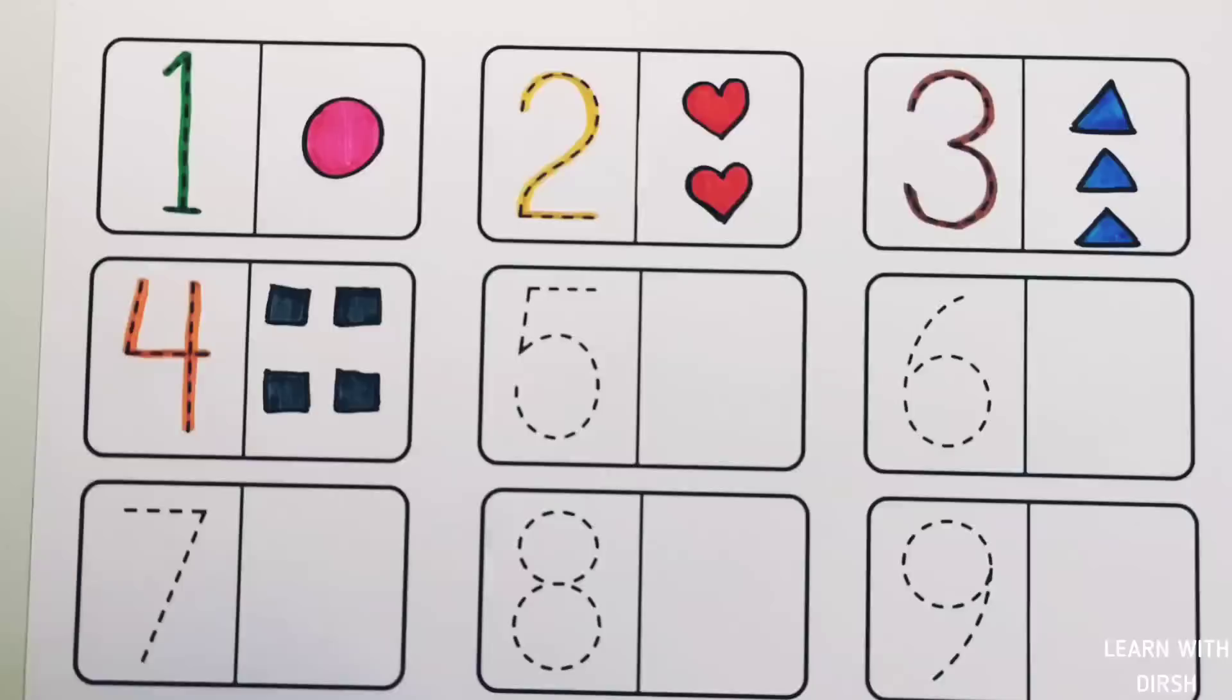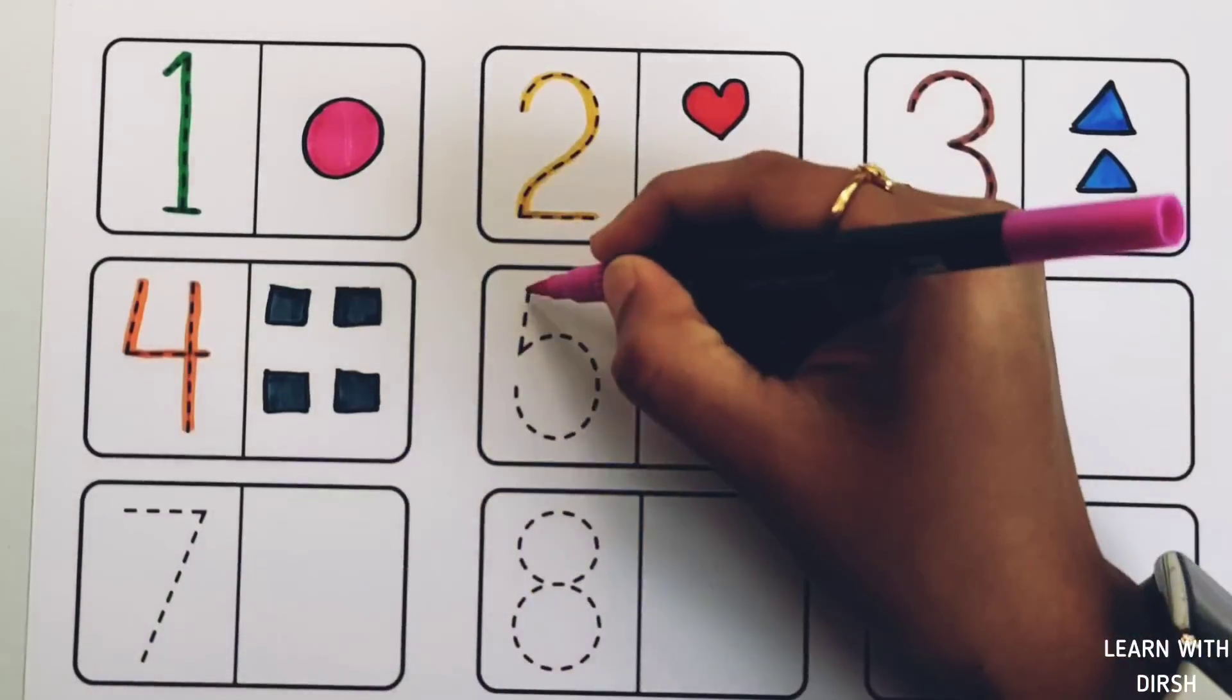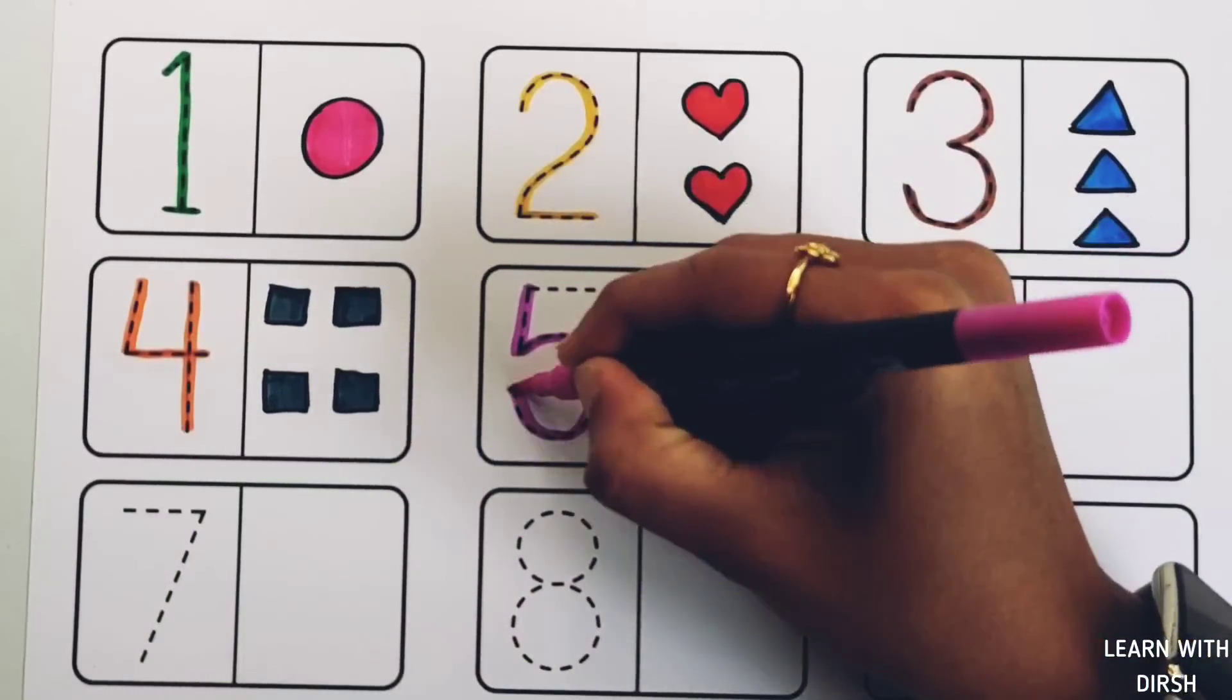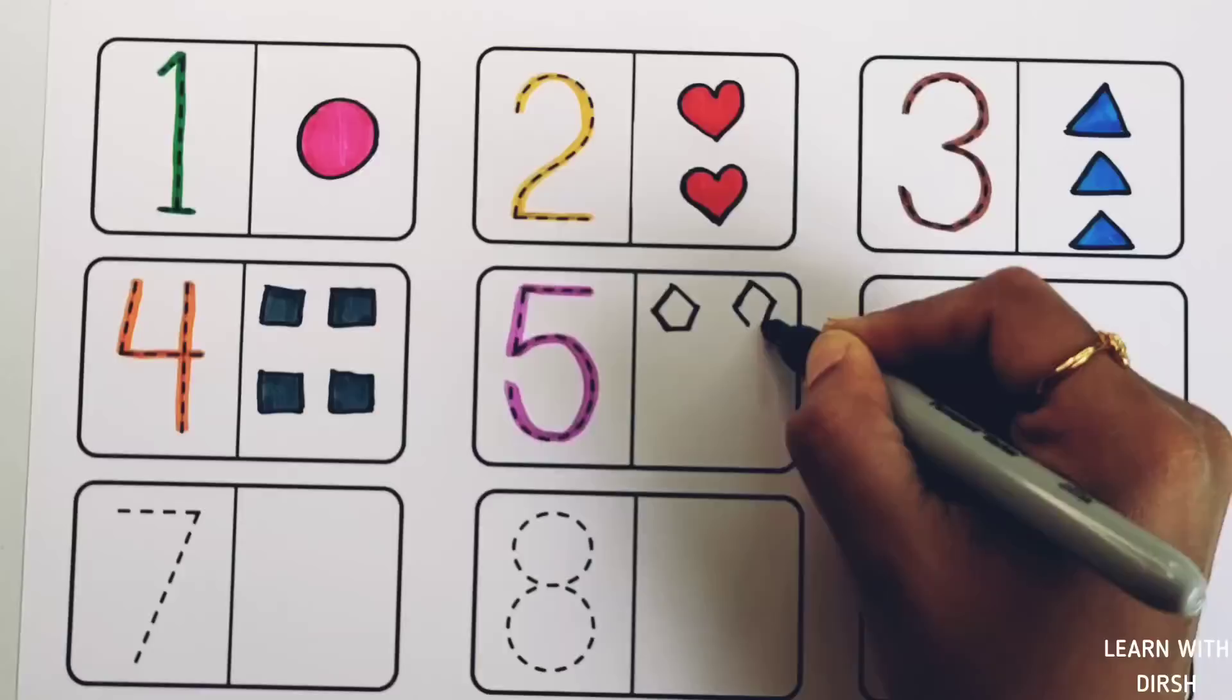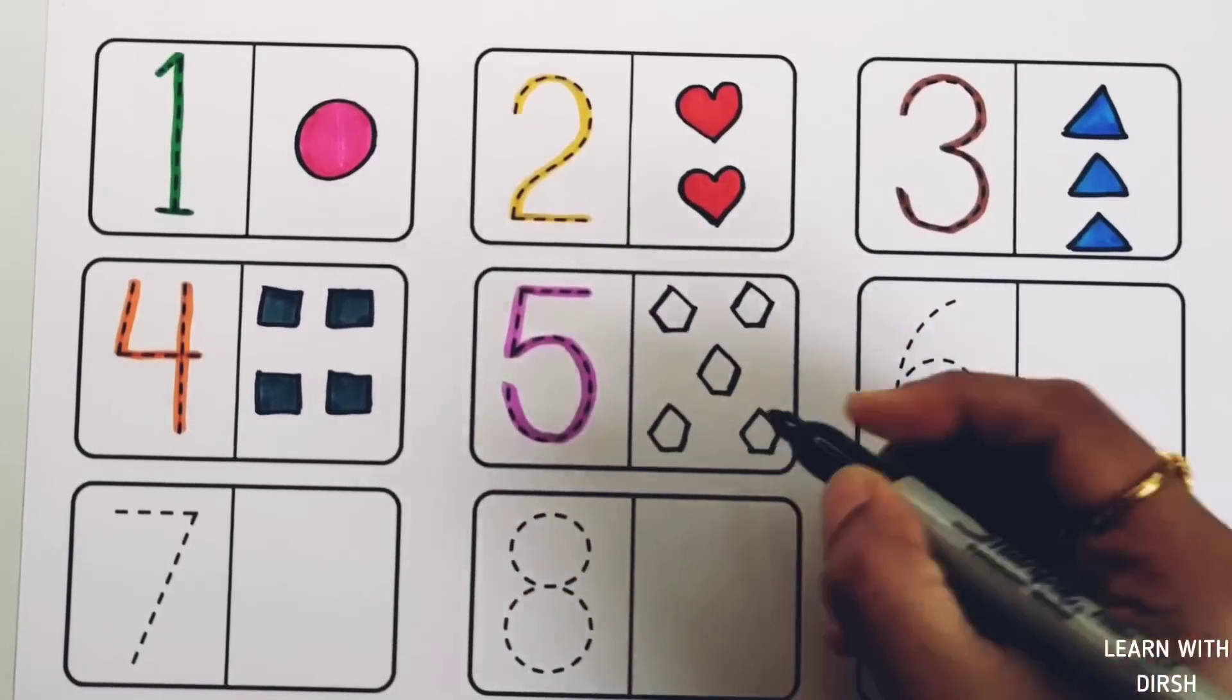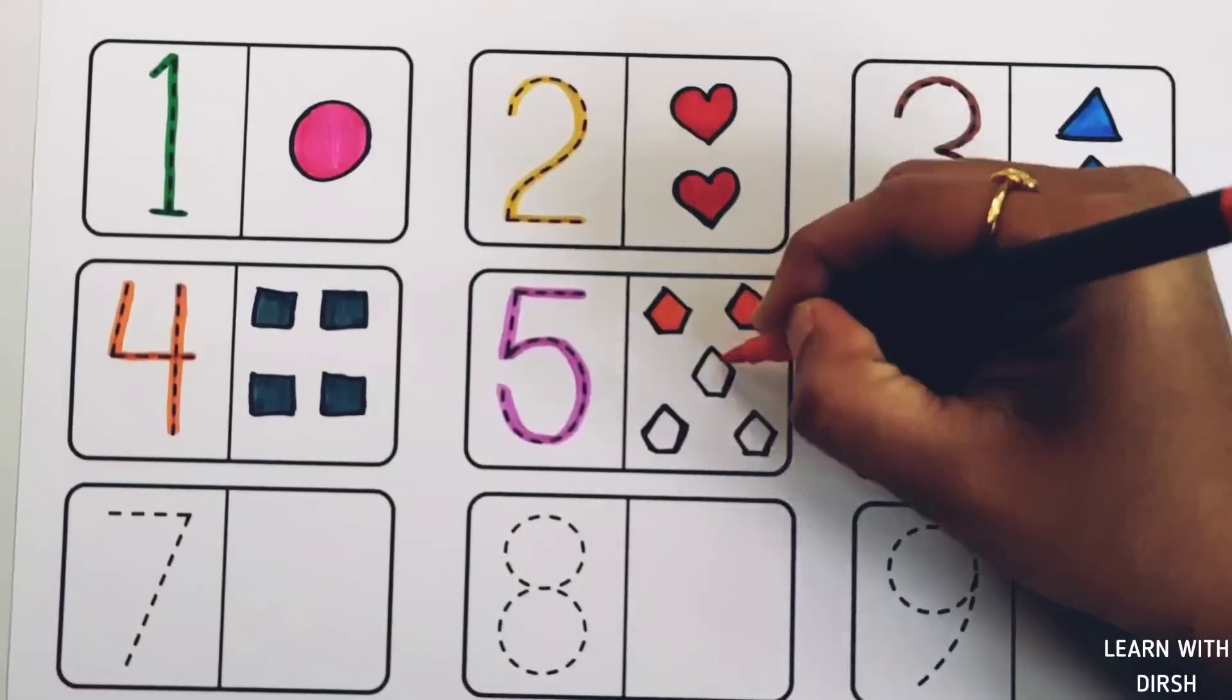1, 2, 3, 4. Four squares. Number five: five pentagons, orange color.